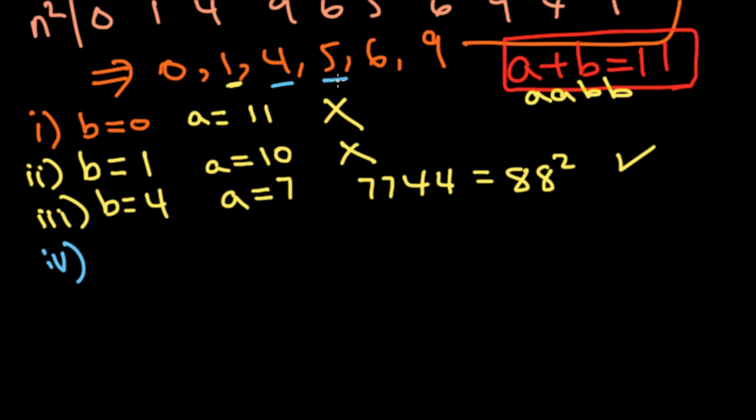And fourth case, when B equals 5. B equals 5, A will equal 6. And 6655 is not a perfect square.